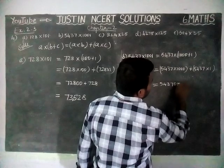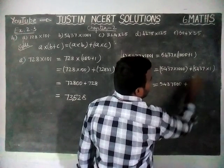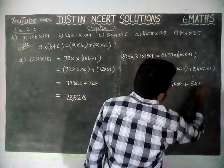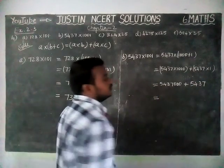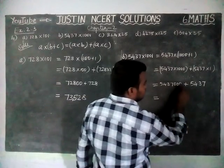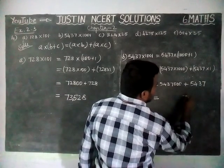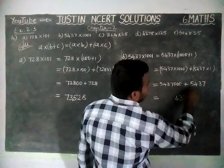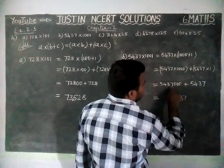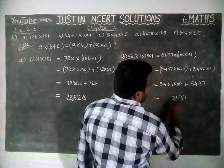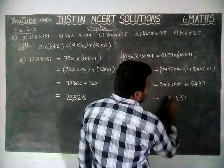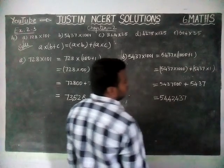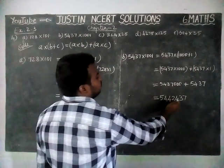Here we have 3 zeros, so 5,437 into 1000 gives 5,437,000. Plus 5,437 into 1 equals 5,437. Now adding: 0 plus 7 is 7, 3 plus 0 is 3, 0 plus 4 is 4, then 5 plus 7 is 12 — carry 1, 3 plus 1 is 4, and 4 and 5. So the answer is 54,42,437.